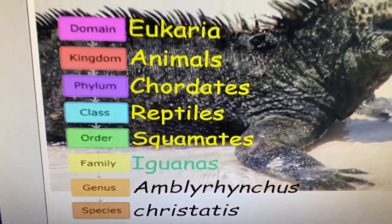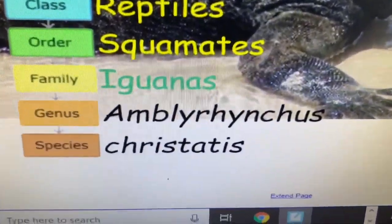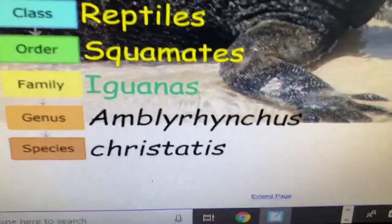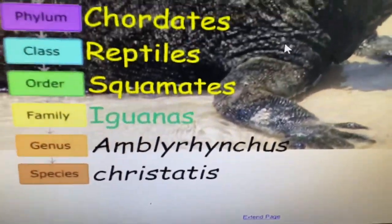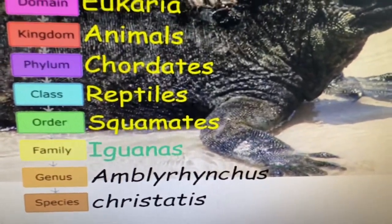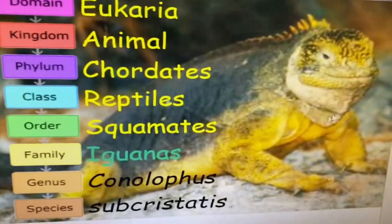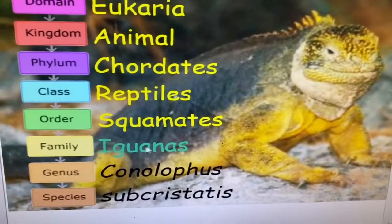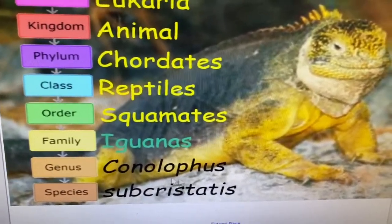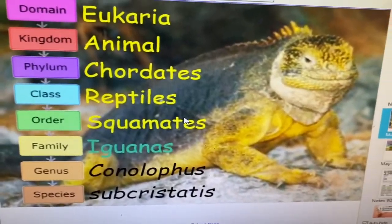But there are other levels of classification, and it's quite obvious that these guys are iguanas — that's their family. They have relatives that look similar. They're also iguanas, but they're not the same. They're different species, and not only different species, they're also different genera.